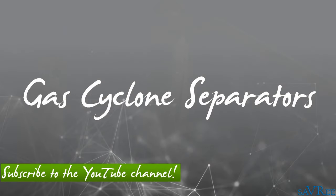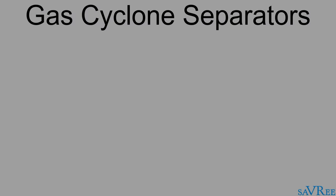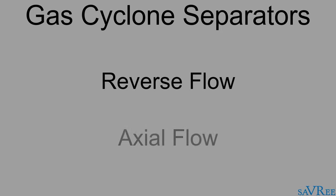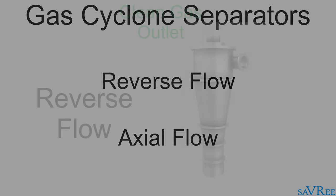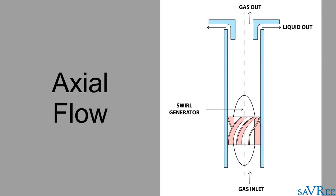Gas cyclone separators are grouped into two main categories: reverse flow and axle flow. Reverse flow cyclone separators are cone-shaped. Gas enters the top of the separator body, flows downwards, then flows back upwards, and is discharged. For axle flow cyclone separators, gas enters at one end and is discharged at the opposite end. The axle flow design is not as common as the reverse flow design.